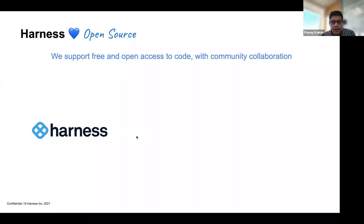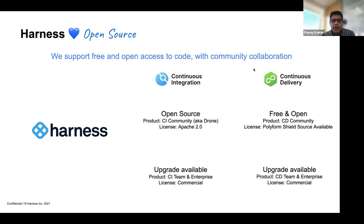Harness really loves open source. In the past, we had the CI module and an offering called Drone, which is completely open source using the Apache 2.0 license. Now we've taken a step forward with CD — we now have a free and open community edition which uses the Polyform Shield source-available license. Overall, Harness supports free and open access to code with community collaboration.